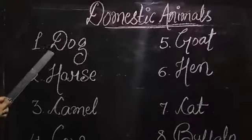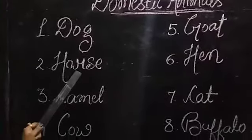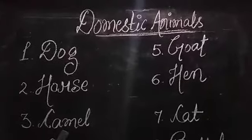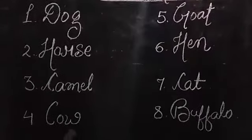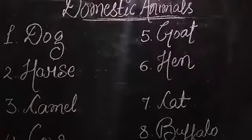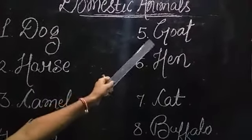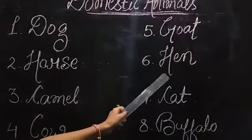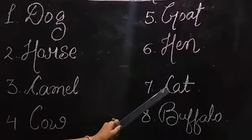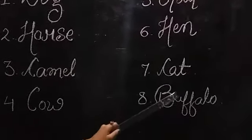Let's review: first, dog; second, horse; third, camel; fourth, cow; five, goat; six, hen; seven, cat; eighth, buffalo.